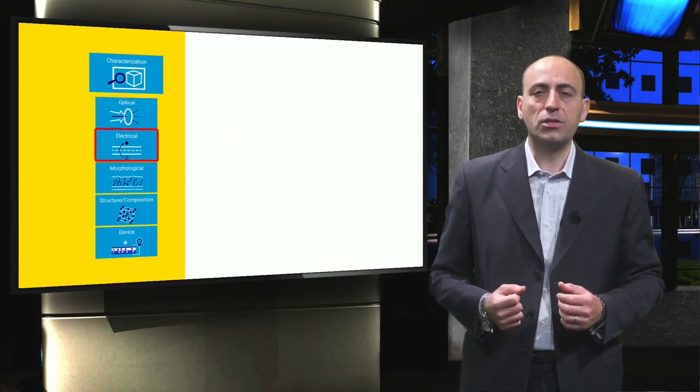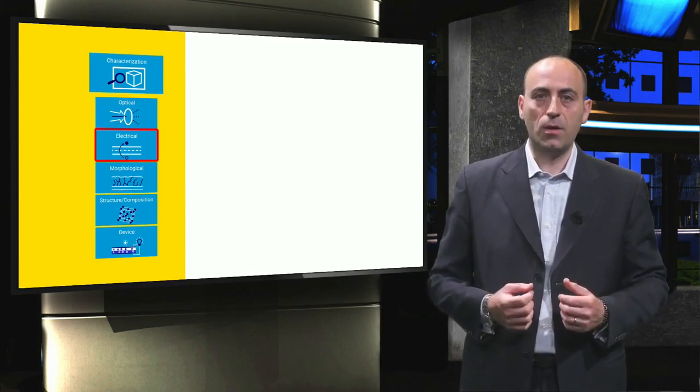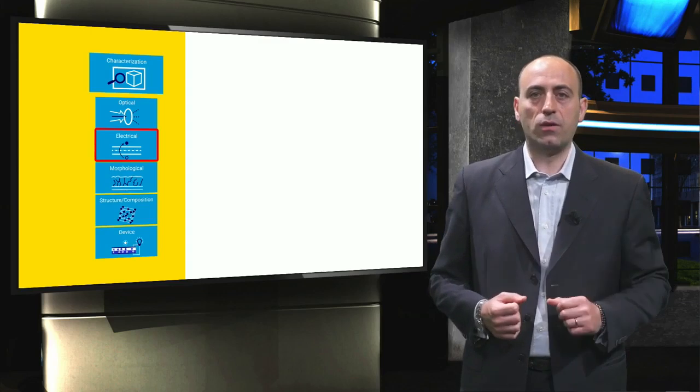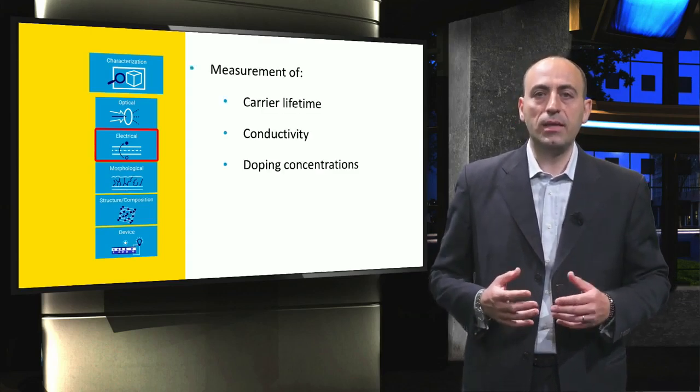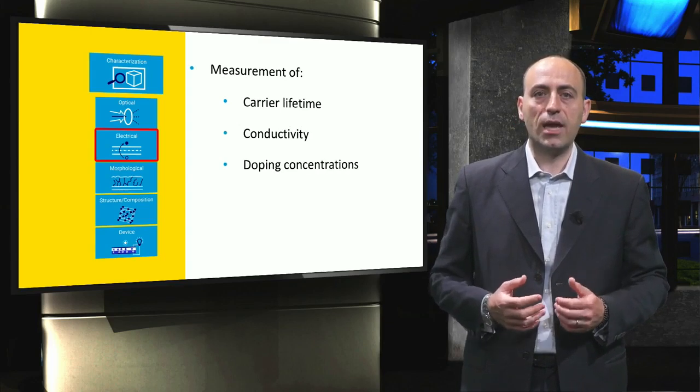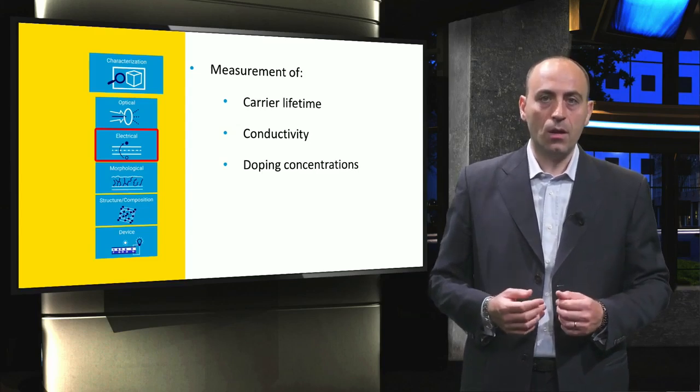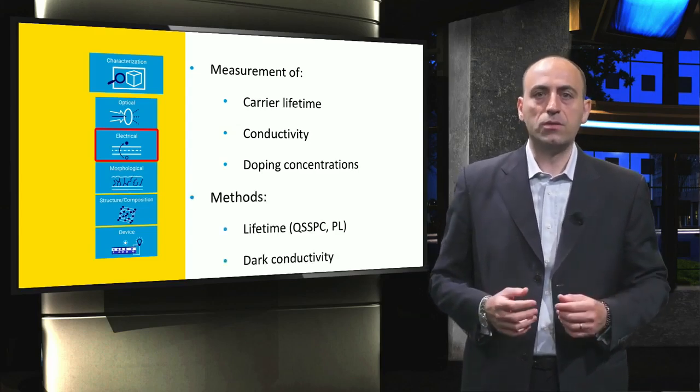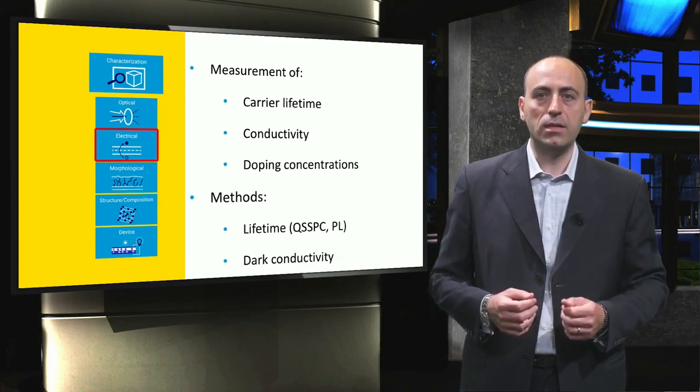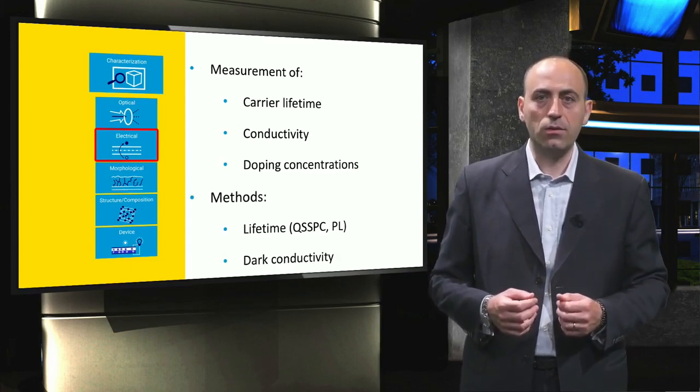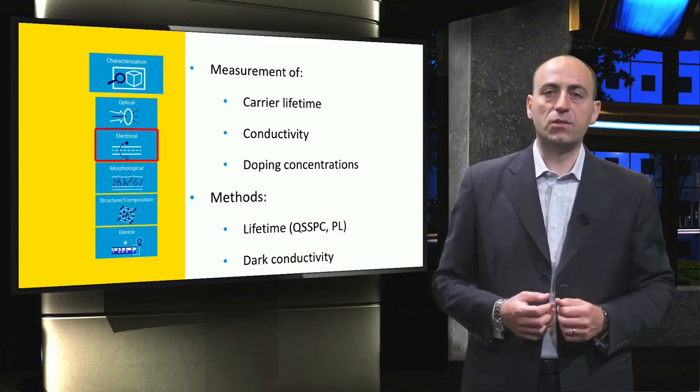Electrical characterization is used to determine the electronic behavior of materials, which are then used as input for electrical simulations. The most important properties that can be analyzed are the lifetime of charge carriers, the conductivity of materials and layers, and the concentration of doping. Among the various available methods, we will discuss measurements of carrier lifetime using the quasi-steady-state photoconductance method, abbreviated to QSSPC, and the photoluminescence or PL.